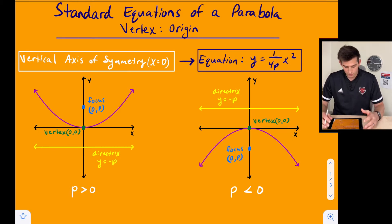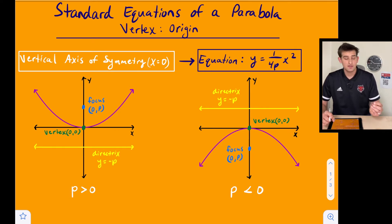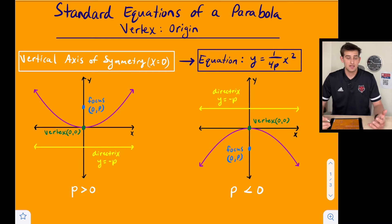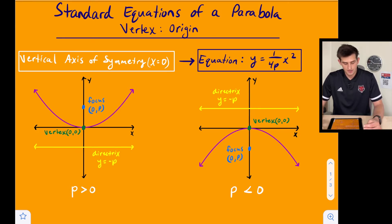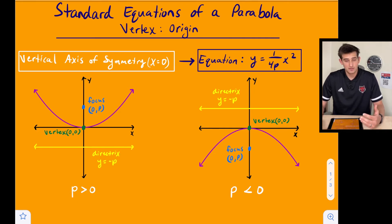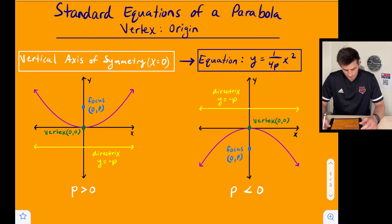First off, we'll start with a parabola that opens up or down. When we have this, we're going to have a vertical axis of symmetry, which in this case will be x equals zero because our vertex is at the origin. So we have our parabola, our focus, our vertex, and our directrix. The focus is at (0, p) and our directrix is y equals negative p, because the directrix and the focus are the same distance away from the parabola.